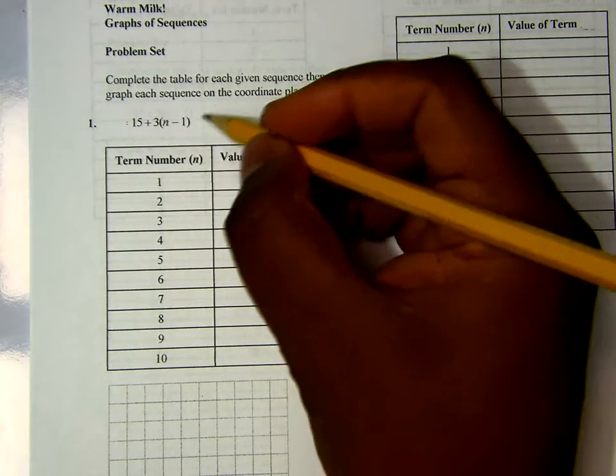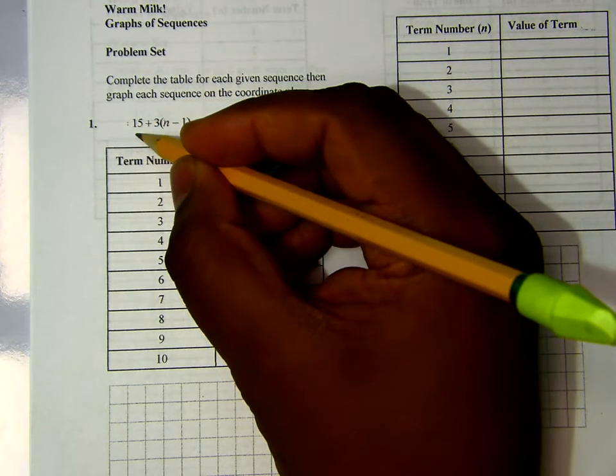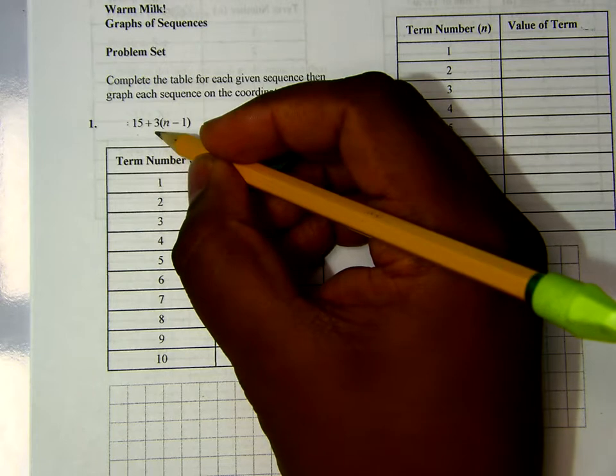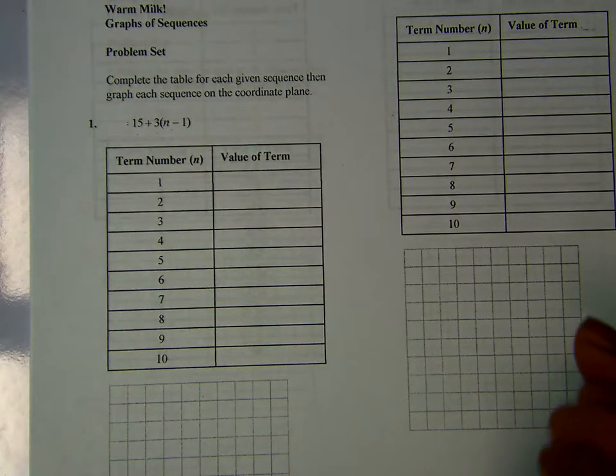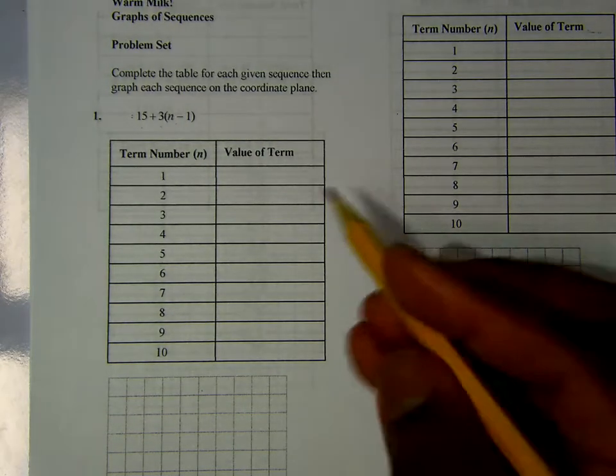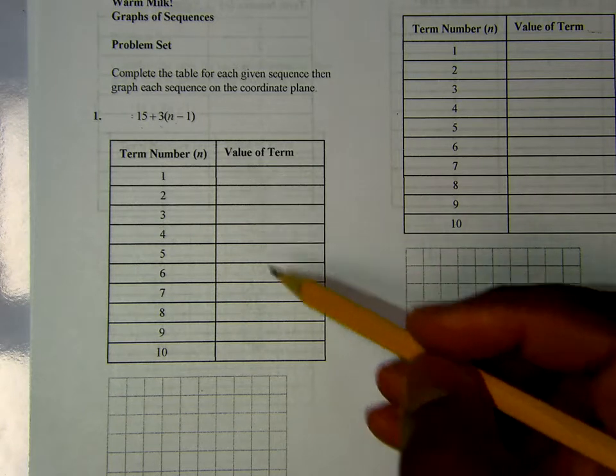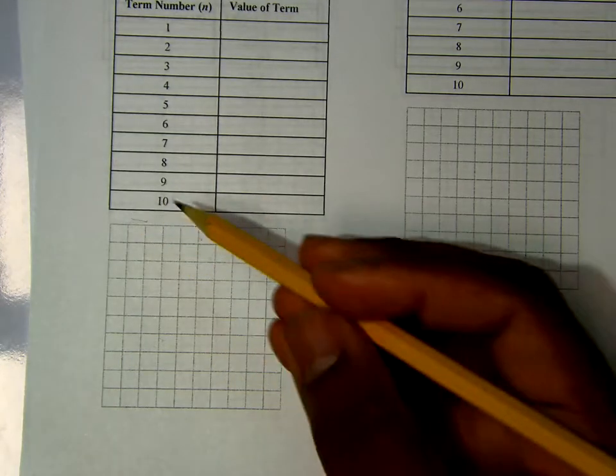Well, with this not having the exponent in it here, and this being our first term, this being our common difference, this being our n, this is going to be an arithmetic sequence. Now, first thing we're going to do is plot out the table and then use the table to make the graph.